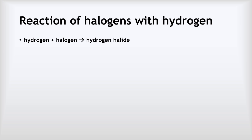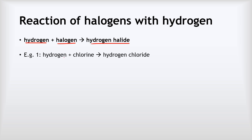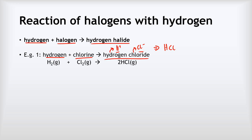So how do the halogens react with hydrogen? A hydrogen and a halogen always react together to make a hydrogen halide. For example, hydrogen reacts with chlorine to make hydrogen chloride. The formula for hydrogen chloride: hydrogen forms H+ ions and chloride forms Cl- ions, so we need one of each — formula HCl. The symbol equation is H2 + Cl2 → 2HCl, giving us two hydrogens and two chlorines on each side.